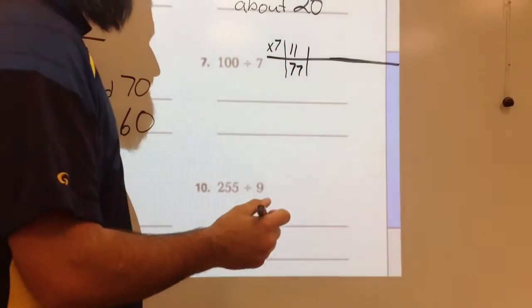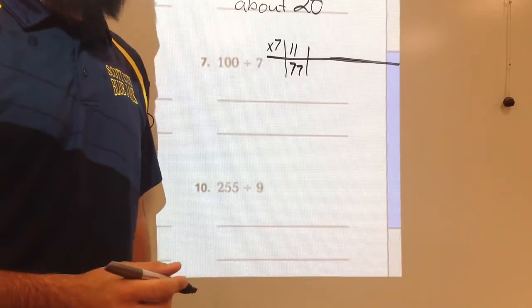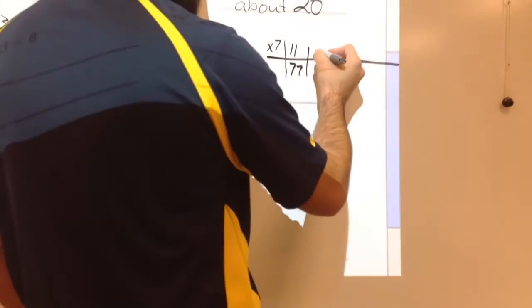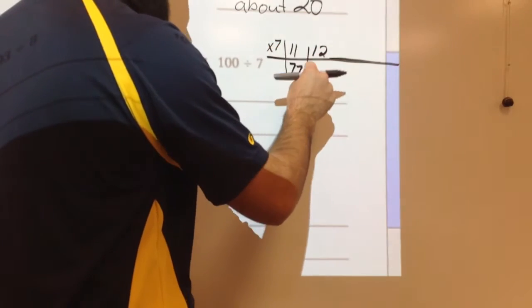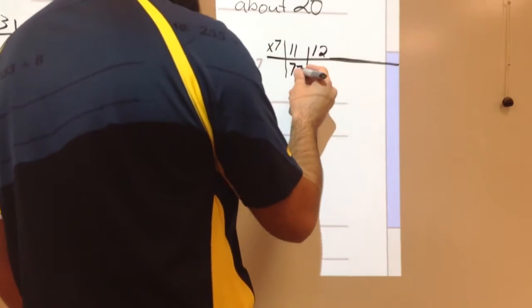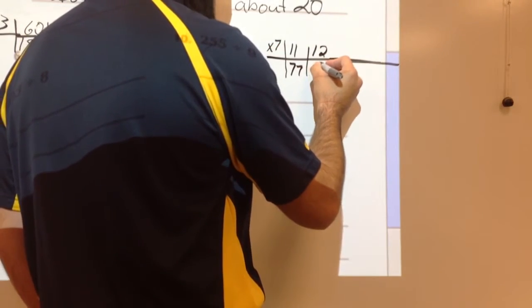So let's just keep counting up. Because 77 is pretty close to 100, right? Okay, so what's next number? 12, right? Nice thing is here, 7 times 12, you're just adding 7. So what's 77 plus 7? 84.